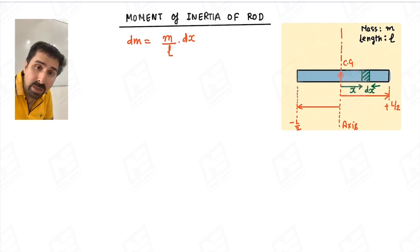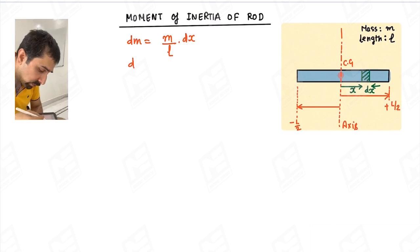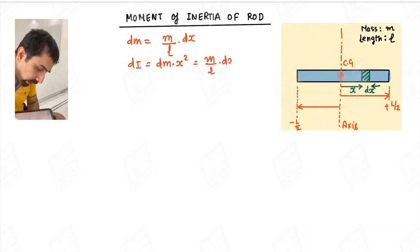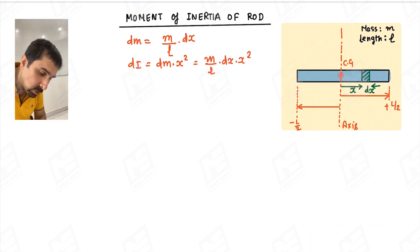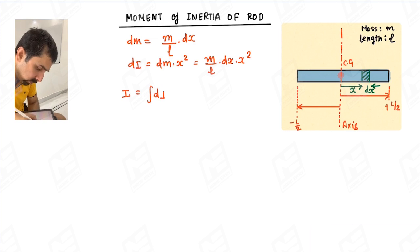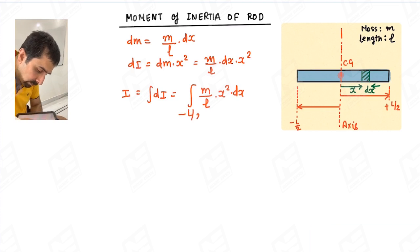The moment of inertia of this differential element dI will be equal to dm multiplied by x squared. So dI equals m upon l times dx times x squared. Integrating this expression from minus l/2 to plus l/2 will cover the complete rod, so I equals the integration of m upon l times x squared times dx from minus l/2 to plus l/2.